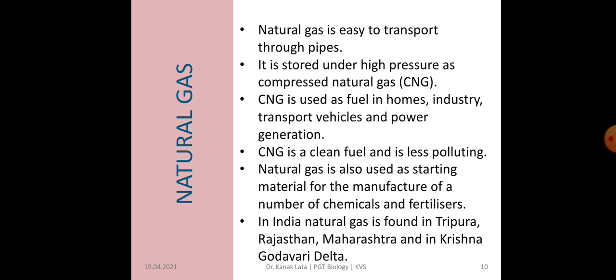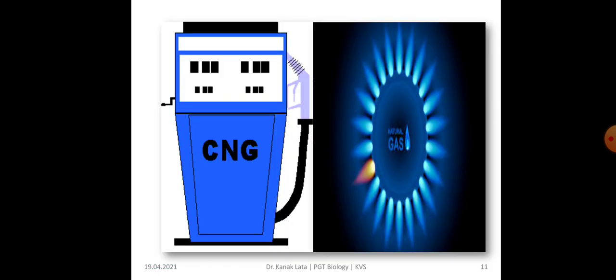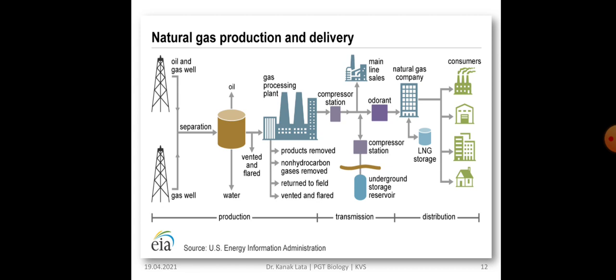Natural gas is also used as a starting material for the manufacture of a number of chemicals and fertilizers. There are many places where natural gas is found, like Tripura, Rajasthan, Maharashtra, and in the Krishna-Godavari Delta. Here you can see the CNG flame and natural gas flame. This shows natural gas production and delivery — how it is produced, transmitted, and distributed to various consumers.